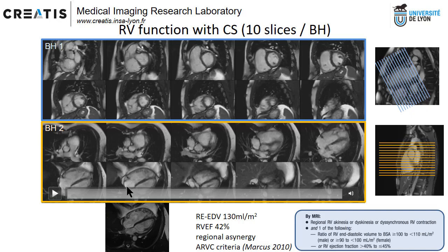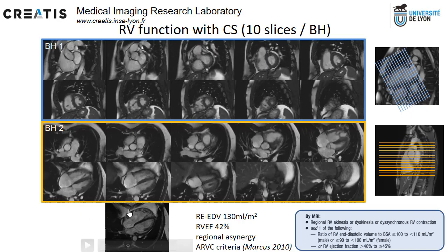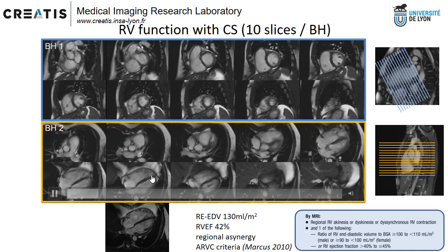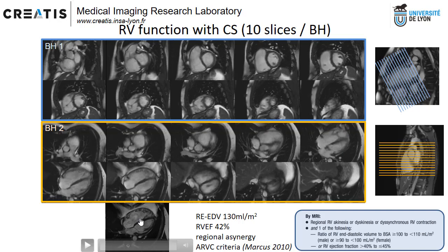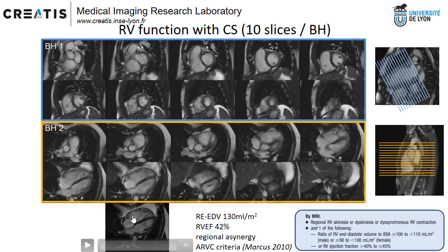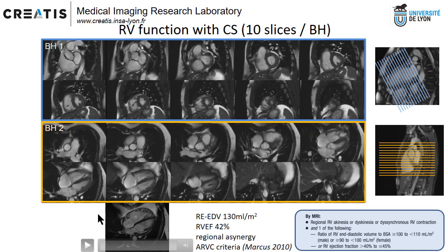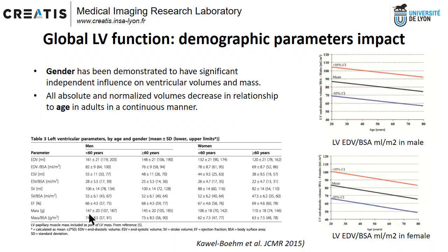With compressed sensing, there is good delineation of the RV and you can do the quantification and answer the question in just two breath-holds.